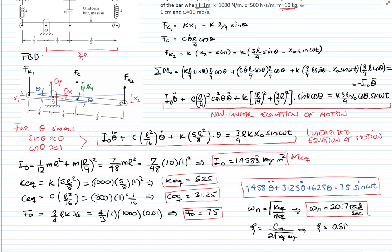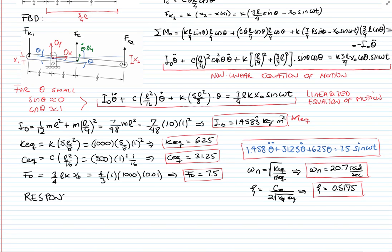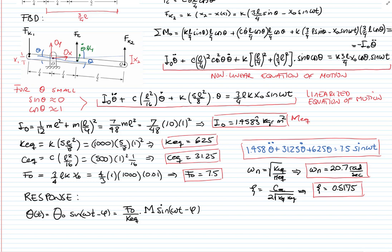The steady-state response is theta(t) = theta_0 sine(omega t − phi). Since we only seek the steady-state response and have no initial conditions, there is no homogeneous solution. The amplitude theta_0 is F0 divided by the equivalent spring constant times the amplification factor: (7.5 / 625) divided by sqrt[(1 − r²)² + (2 zeta r)²].